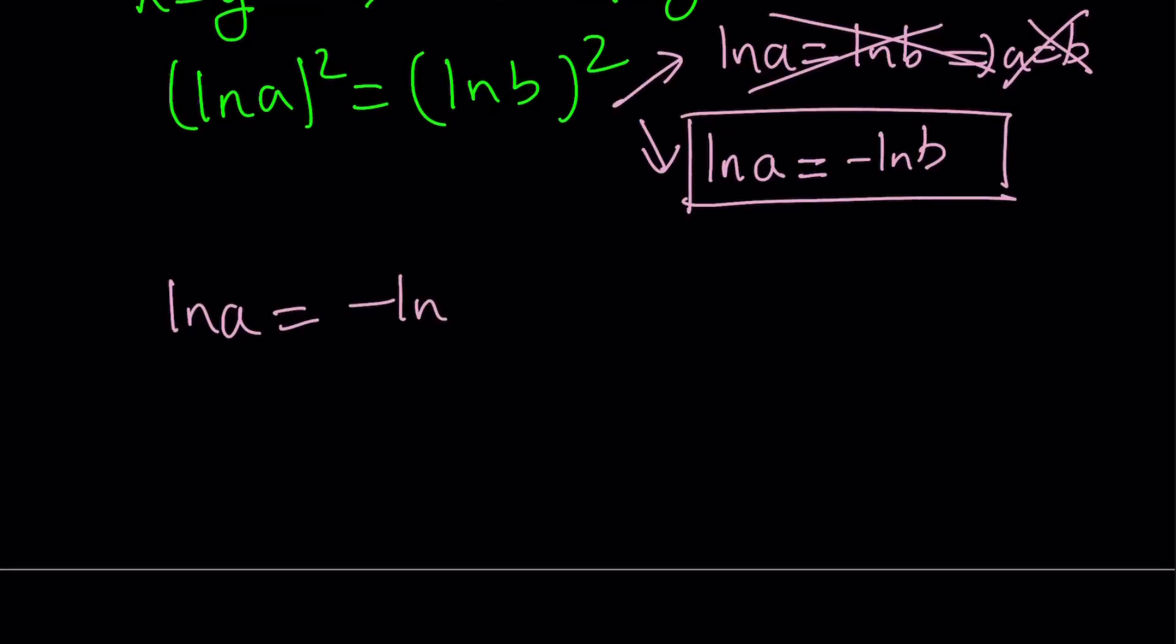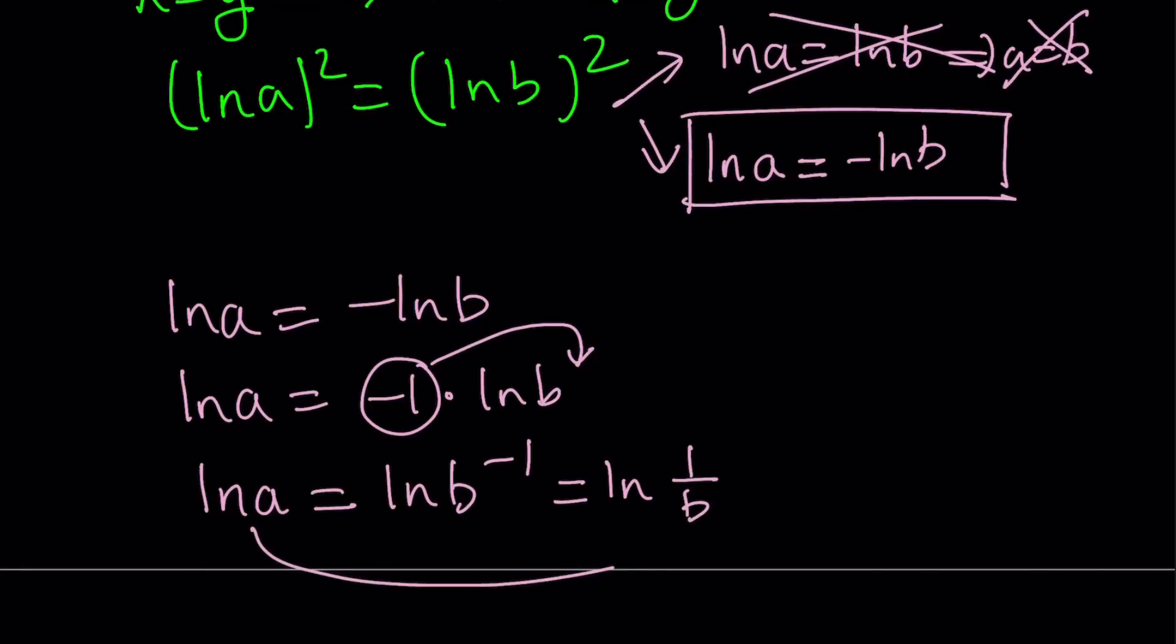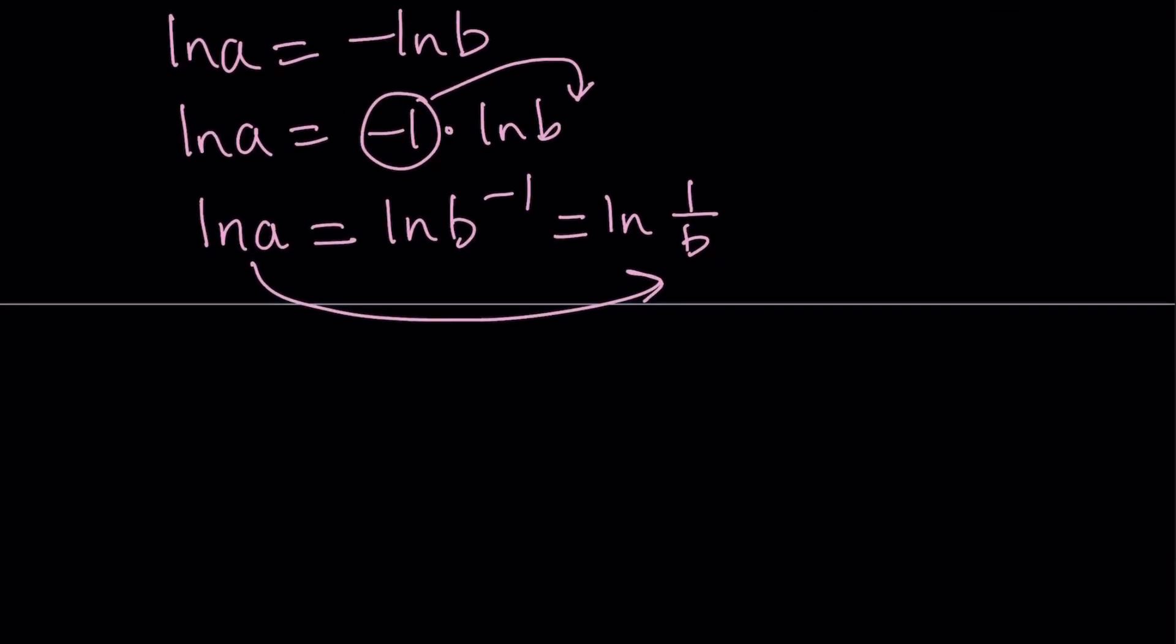So ln a is equal to negative ln b. What is that supposed to be? So we can write this negative as negative 1 times ln b. And obviously, we can just move this over here, make it a power. And this is the power properties of logarithms. We can write this as ln b to the power of negative 1. But b to the power of negative 1 just means 1 over b. Make sense? ln 1 over b. So we got this result. ln a does not equal ln b, because that would imply it equals b. That's impossible, but ln a can equal ln 1 over b, which implies a is equal to 1 over b. Or you can also write this as a times b is equal to 1, right?